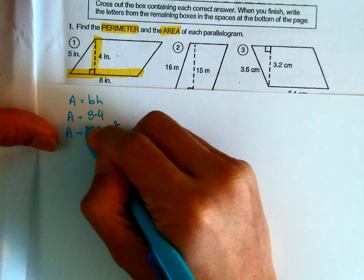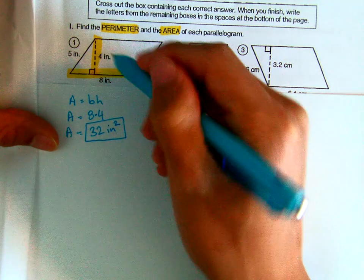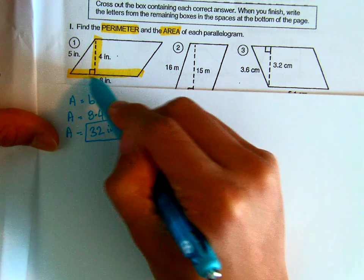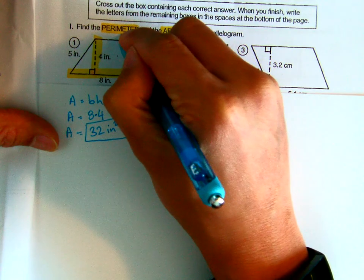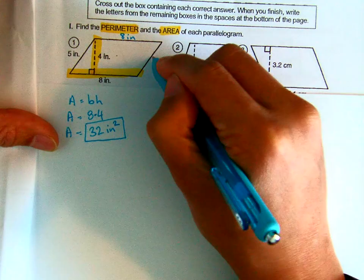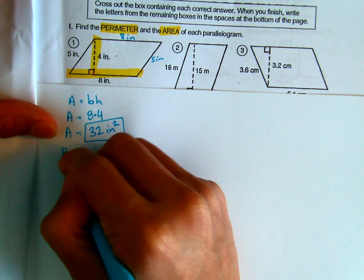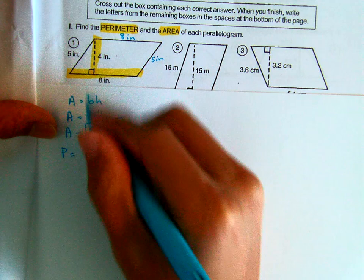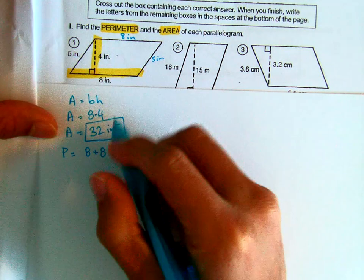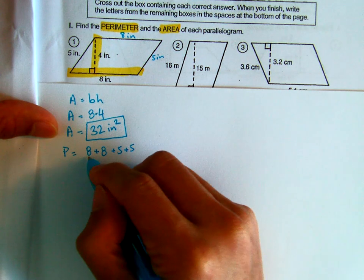So that's going to be our area. To find the perimeter you have to add up all the sides. If the bottom is 8 inches for a parallelogram we know the top is going to be 8 inches as well. If the left side is 5 inches you know the right side is also 5 inches. So perimeter can be found by adding up all the sides.